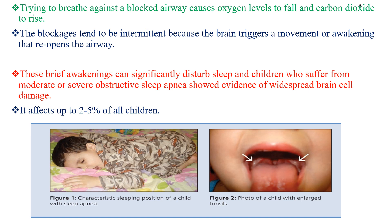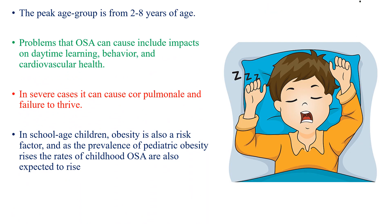The blockage tends to be intermittent because the brain triggers a movement or awakening that reopens the airway. This brief awakening can significantly disrupt sleep, and children who suffer from moderate to severe obstructive sleep apnea show evidence of widespread brain cell damage. This problem affects 2–5% of all children; however, the peak age group is from 2–8 years of age.